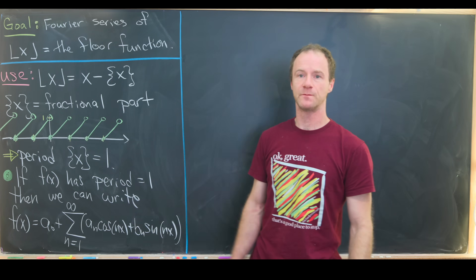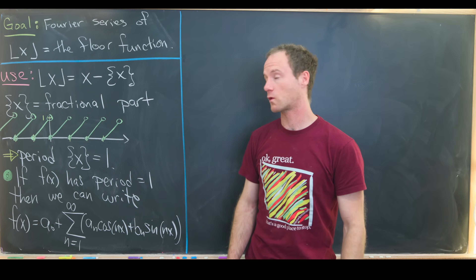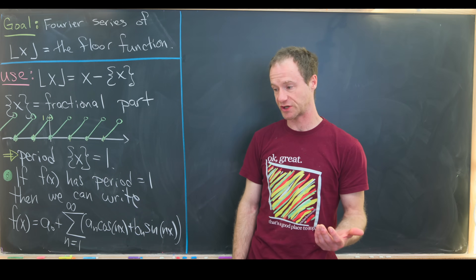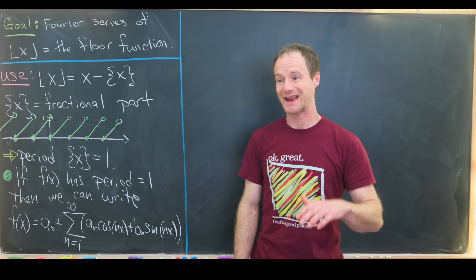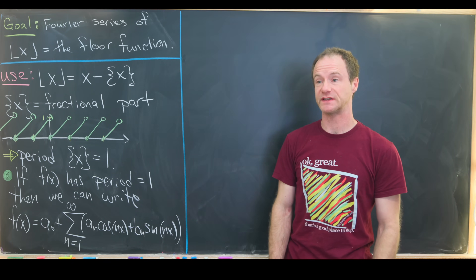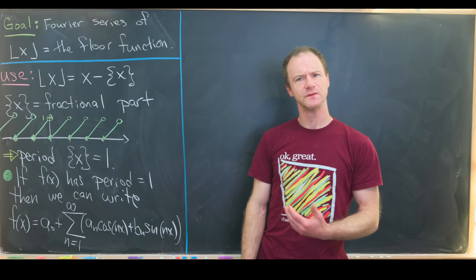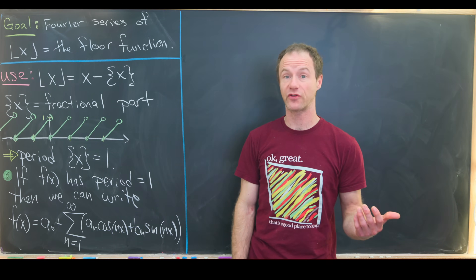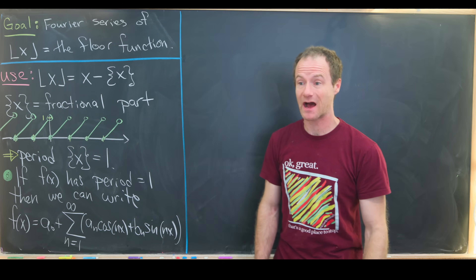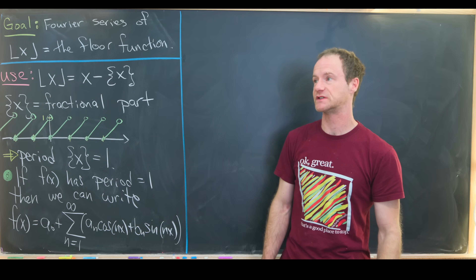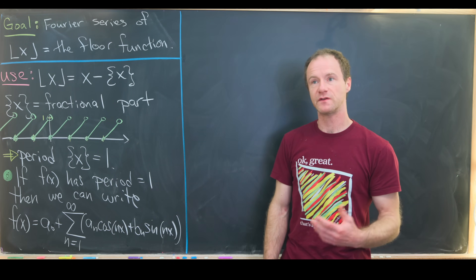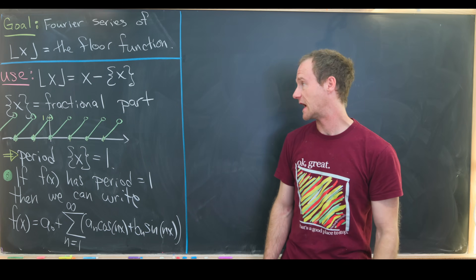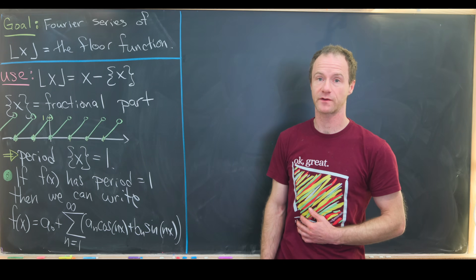We're going to work with the floor function. The floor function is like an elevator down to the closest integer. For example, the floor of 3.5 is 3, because we go down to the closest integer. The floor of 2 is 2 because we're already at an integer, and so on and so forth.